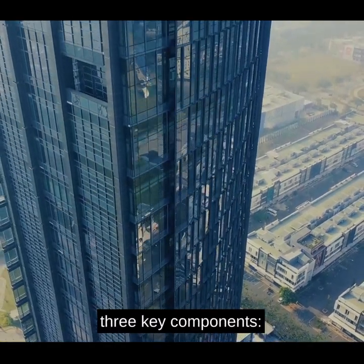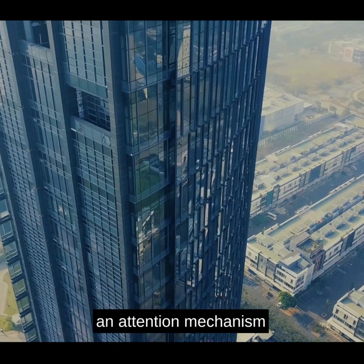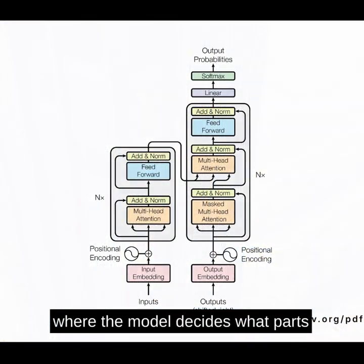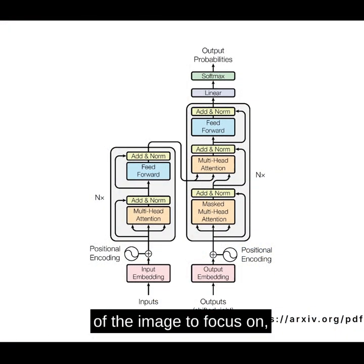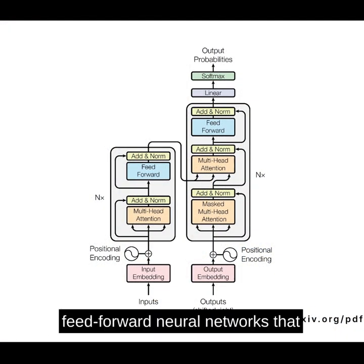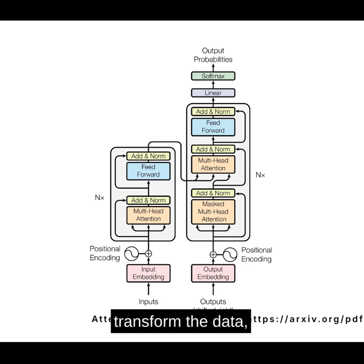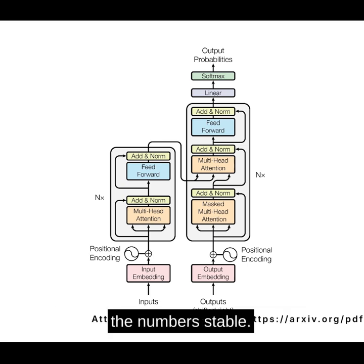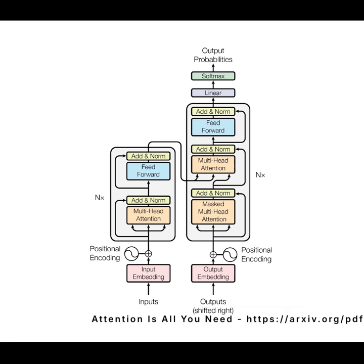Each block contains three key components: an attention mechanism where the model decides what part of the image to focus on, feed-forward neural networks that transform the data, and normalization layers that keep the numbers stable.